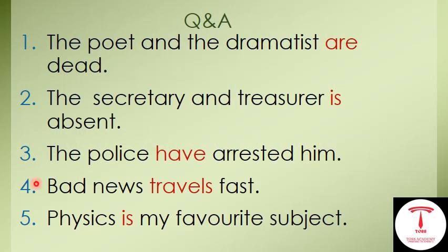We know that Concord is a vast area in grammar and more questions are asked from this portion. In a single lecture it is not possible to cover everything, but here are five important rules. First example: 'The poet and the dramatist are dead.' Two separate subjects joined by 'and' take a plural verb. Second: 'The secretary and treasurer is absent' — here only one definite article is used, meaning one person holds both positions, so we use the singular verb 'is.'